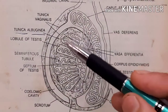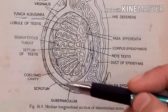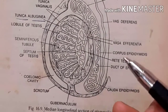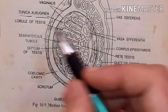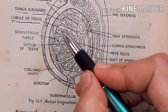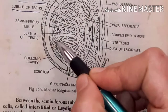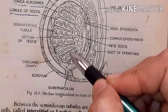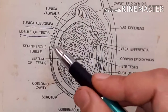Each testis is divided into about 200 to 250 compartments called testicular lobules.